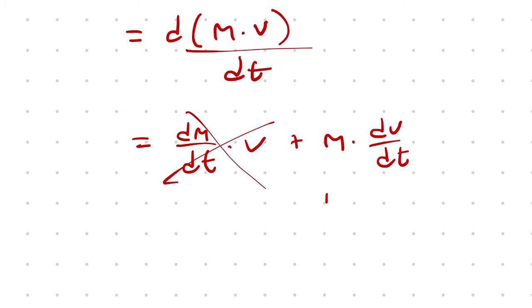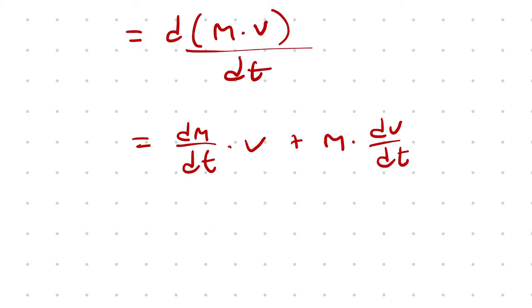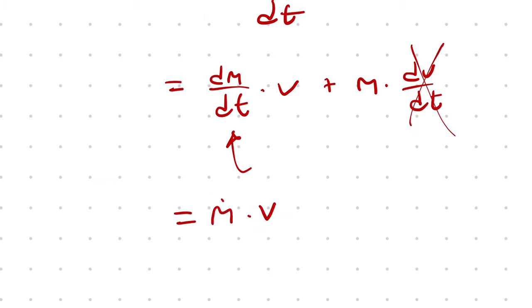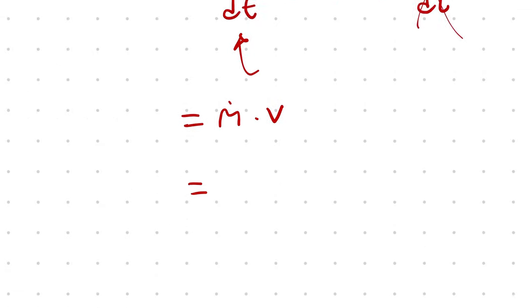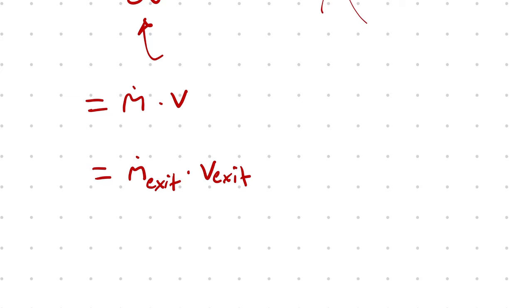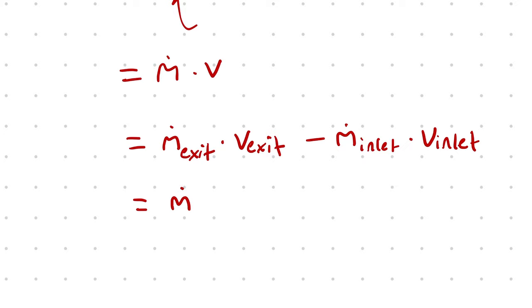When our mass doesn't change, we get rid of the dm/dt term and are left with mass times acceleration — the F = ma you've used many times. But for our purposes we have a mass flow rate, so we keep that term. However, we don't need acceleration anymore, so we can drop the m·dv/dt term. We are left with mass flow rate times velocity. The force of thrust is therefore the mass flow rate at the exit times velocity at the exit, minus the mass flow rate at the inlet times the velocity at the inlet. Because the engine operates steadily, the mass flow rate is the same everywhere, so this simplifies to mass flow rate times (velocity at exit minus velocity at inlet).